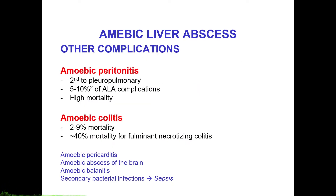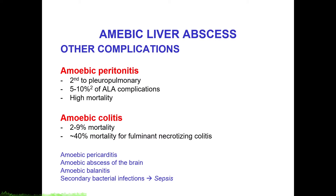Other rare complications of amoebic liver abscess and amoebiasis in general include amoebic peritonitis, which carries a high degree of mortality; amoebic colitis, which has a lower mortality but may progress to fulminant necrotizing colitis with a higher mortality rate; and other spreads such as pericarditis, abscess of the brain, balanitis, and secondary bacterial infection which may lead to sepsis.